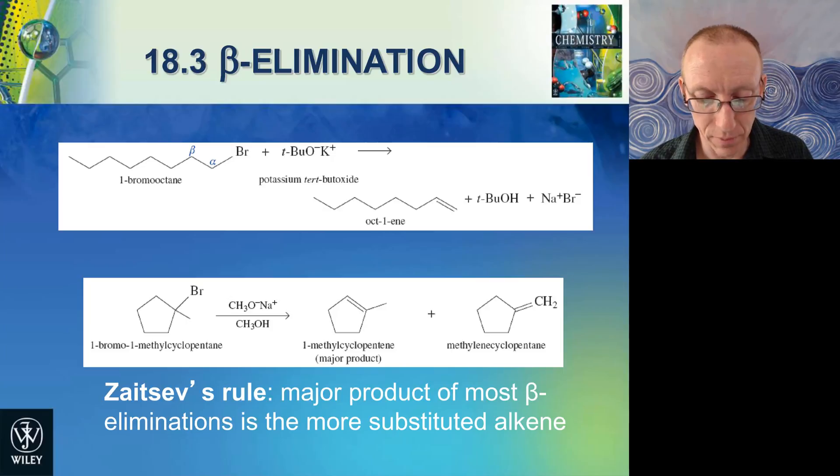So if we use a strong base such as potassium tert-butoxide on a terminal alkyl bromide like this, then we can get a terminal alkene, so in this case, 1-octene.